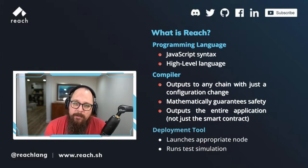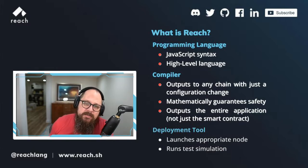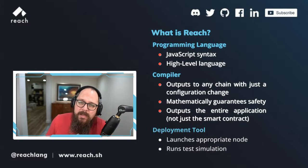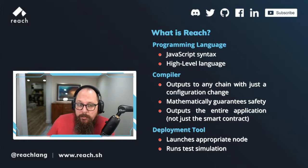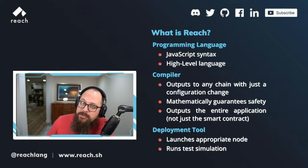The compiler outputs your entire application, not just the smart contract, so you can kiss the complexity of maintaining a million moving pieces goodbye. Once compilation is complete, Reach automatically stands up the appropriate node and launches the dApp on your chain of choice.